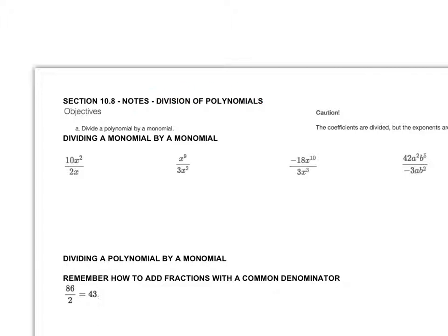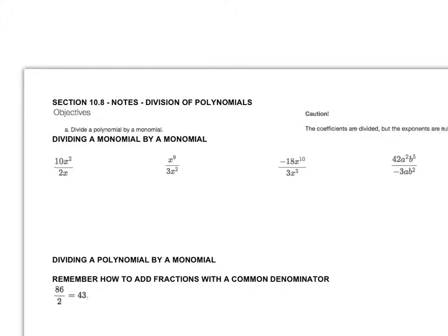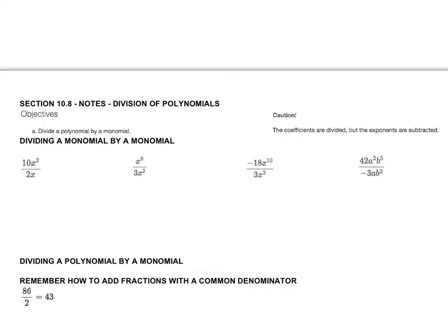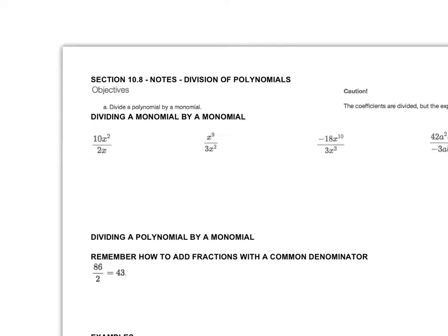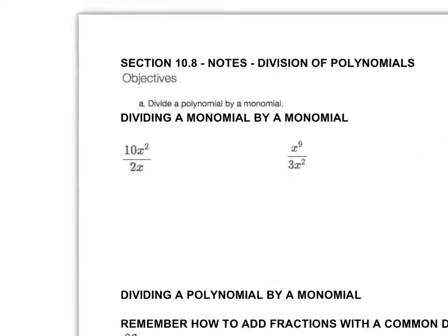Our objectives today: we want to divide a polynomial by a monomial. We're going to start out with some simple rules that will help us. The one thing I want you to remember is that the coefficients are divided, but the exponents are subtracted. I'm going to go through some of these rules and jump into examples on how to do these.